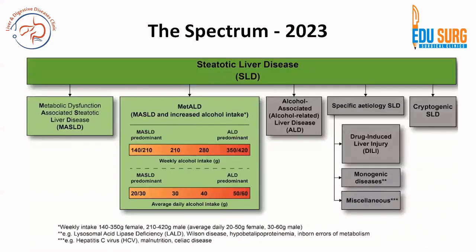This is the spectrum proposed by the 2023 Delphi consensus. Steatotic liver disease is divided into predominantly two parts which are then subdivided. We have MASLD — metabolic dysfunction associated steatotic liver disease — and we have MASLD with alcohol, the co-existent group, which can be alcohol-predominant or metabolic dysfunction-predominant based on the level of alcohol intake.